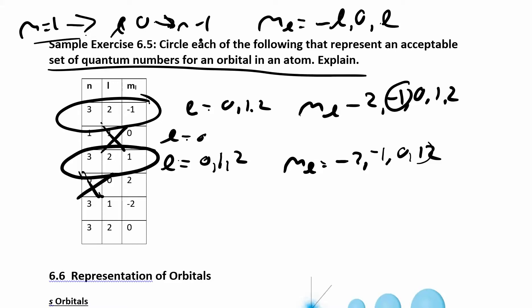So l depends on n. It's going to go from 0 all the way up to n minus 1. And then the ml, the number of orientations I have, depends on what kind of orbital I have, what the shape is. So ml depends on l. So they always depend on each other. So you have to kind of start at the beginning and work your way up.